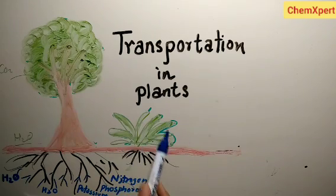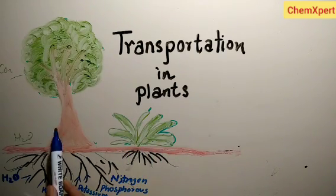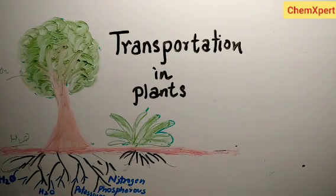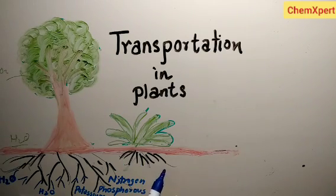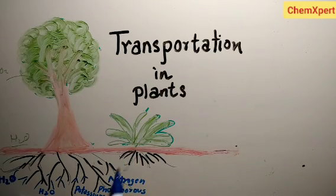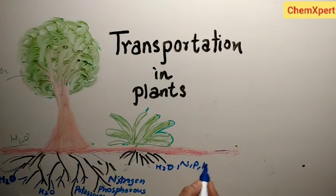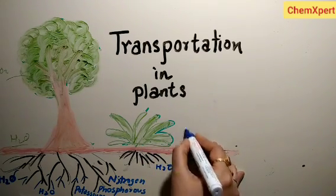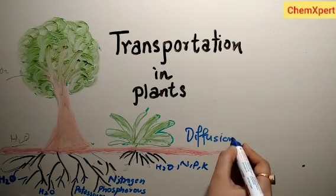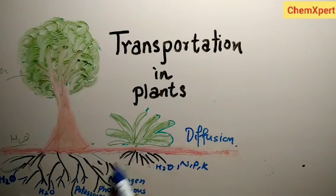If the plant is short in size, the roots are not deeply embedded. For small plants that are not deeply rooted, soil and nutrients can be easily transported by the process of diffusion. If the plant is small, the roots are directly in contact with the soil and it is not deeply rooted.